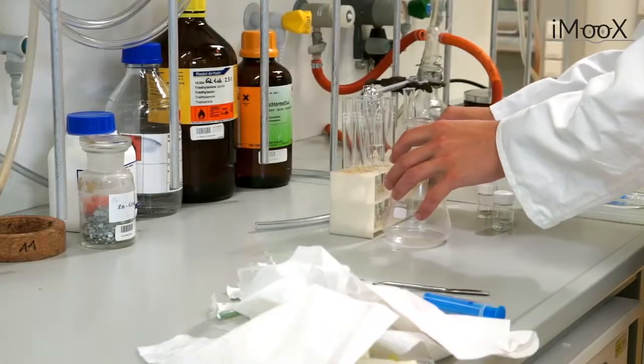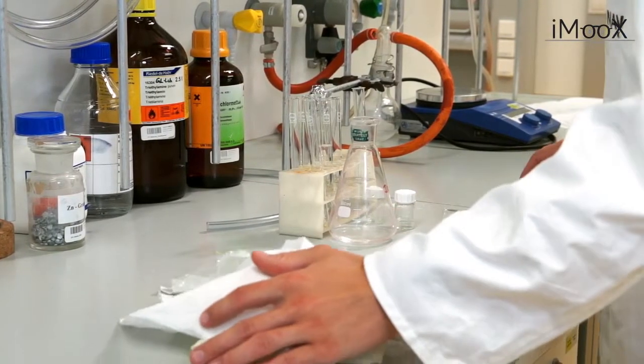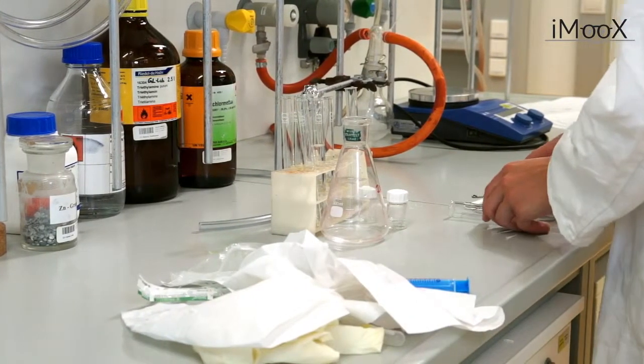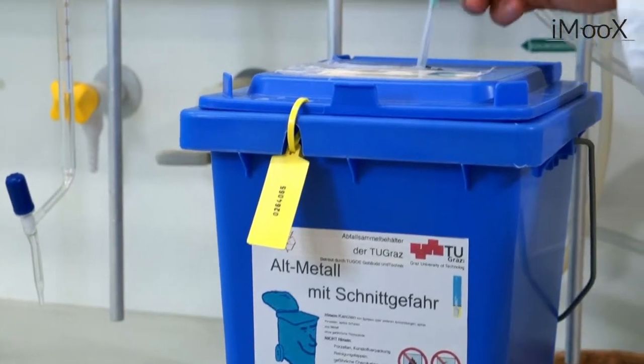Now you should clean up the bench and dispose of any remaining chemicals and waste. There are special containers for the different kinds of waste. For example, there's the container for sharp objects, or for solid chemical waste.